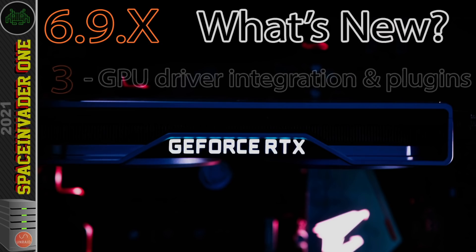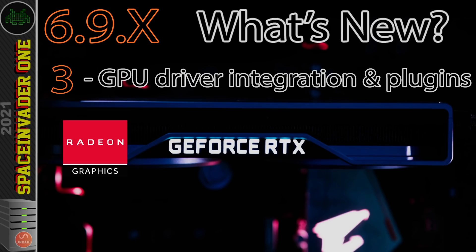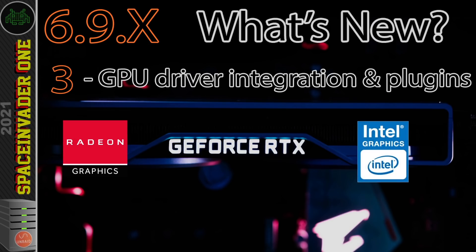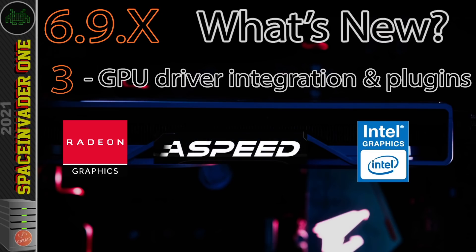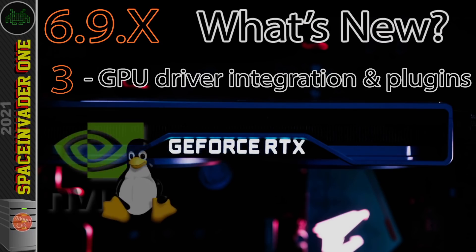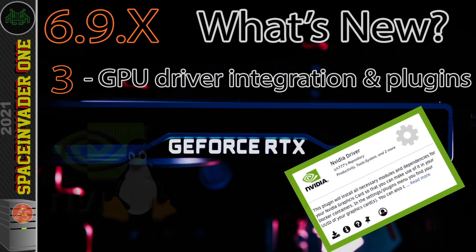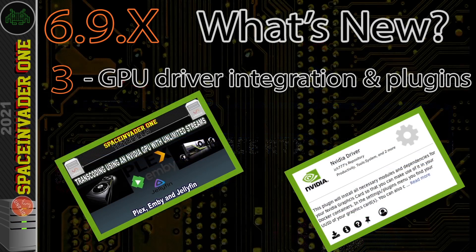Another new feature is GPU driver integration. Unraid now has built-in graphics drivers for AMD, integrated Intel, and ASMedia graphics drivers. These are the open source in-tree GPU drivers included in the Unraid build. If you want to install separate third-party drivers, such as NVIDIA's Linux GPU driver, this can easily be done by downloading a plugin.